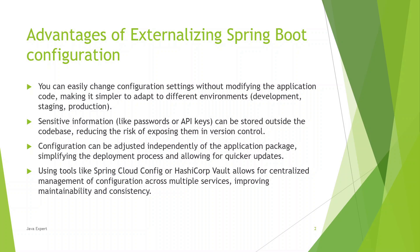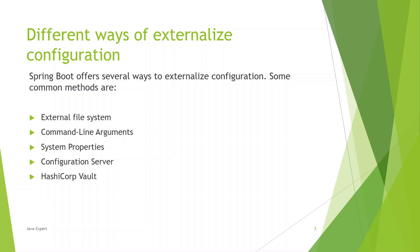For many reasons we'll be moving to the latest versions of tools, and that information will be configured in the property files. Keeping these property files outside of our JAR file will be very helpful for easy deployment. Spring Boot offers many ways to implement externalizing configuration. Commonly used approaches in the industry include: external file system — which is the simplest method requiring no third-party tool — where you place your properties in the file system and the application refers from there.